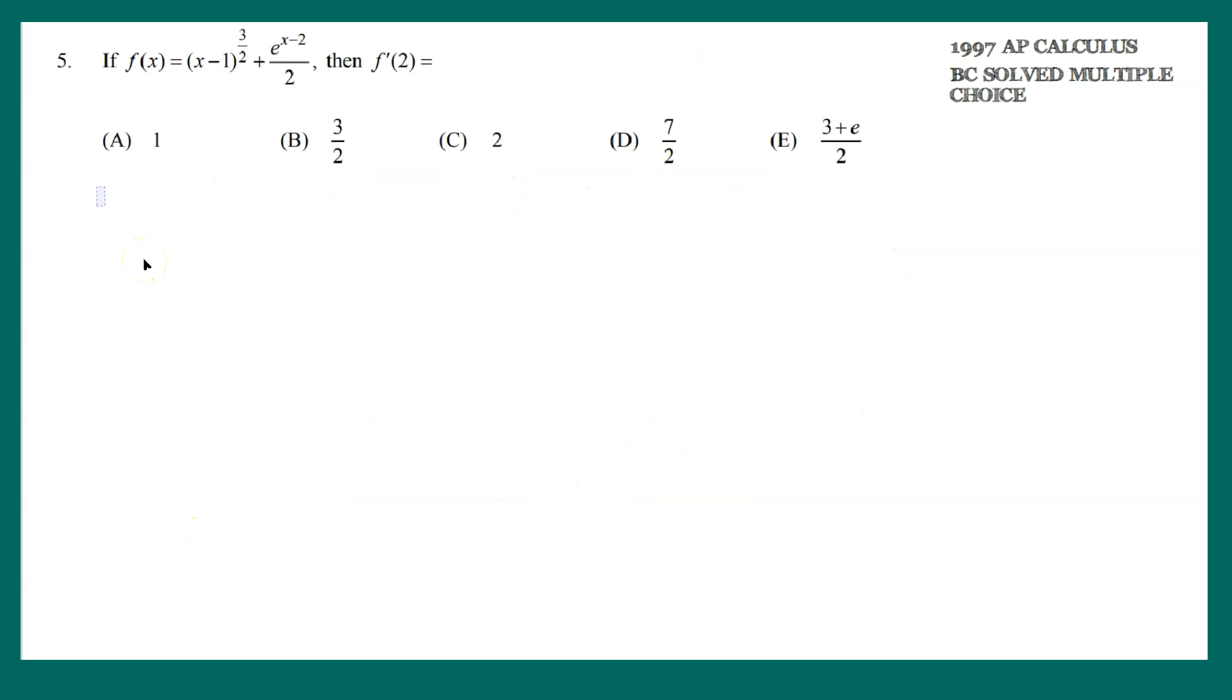Welcome friends, and this one is the 1997 AP Calculus BC, question number 5 from the multiple choice section. It says if f of x is x minus 1 to the 3 halves plus e to the x minus 2 over 2, then f prime at 2 has some value, is given.